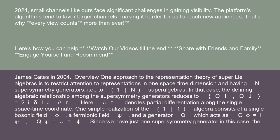In that case, the defining algebraic relationship among the supersymmetry generators reduces to {Qi, Qj} = 2i δij ∂, where δ denotes partial differentiation along the single spacetime coordinate.